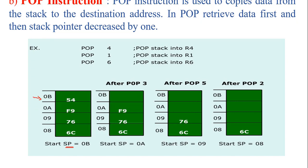The initial value of the stack pointer register is 0BH. When the first POP instruction is executed — POP for R4 — this instruction tells us to pop data from the stack and store it into R4. We pop data from the 0BH location because the stack pointer indicates 0BH, and this data is stored into R4. After executing this instruction, the stack pointer is decremented by 1, so the next location is 0AH. When the next instruction PUSH 1 is executed, it retrieves data from 0AH and stores it into R1 register.